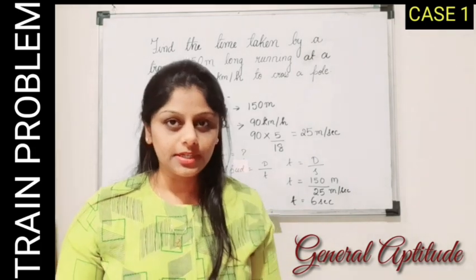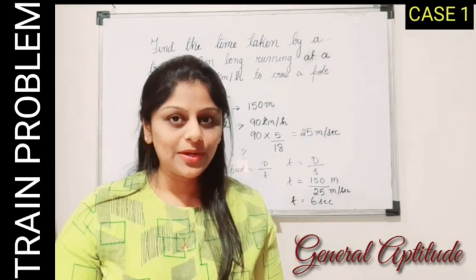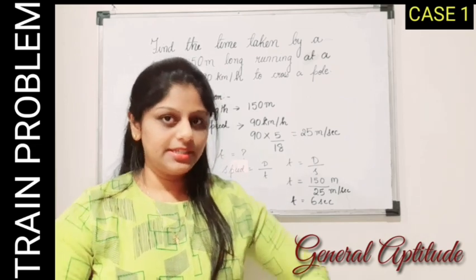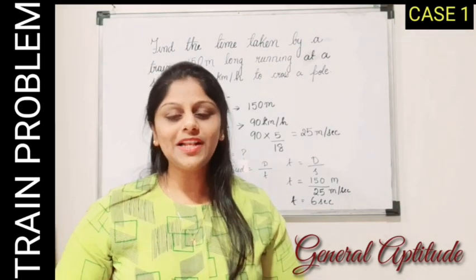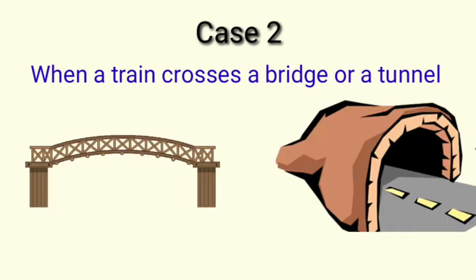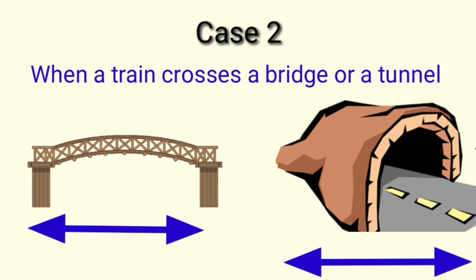The key thing here is that people often memorize the formula but get confused about what to substitute for distance — specifically, whether the length of the train can be the distance covered. After discussing the scenario, it becomes clear. Now let's see case 2, in which a train crosses a bridge or a tunnel. Both a bridge and a tunnel are stationary but have a certain horizontal length. In that case, how do we find the distance to substitute?